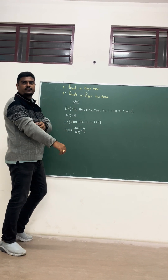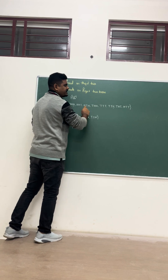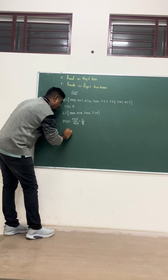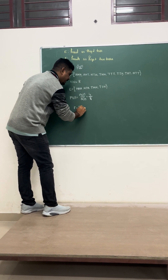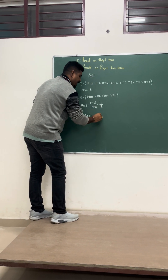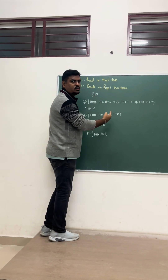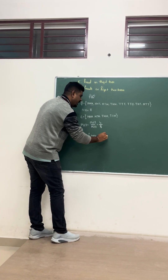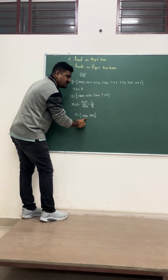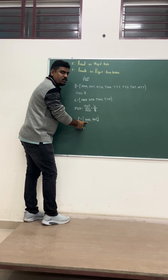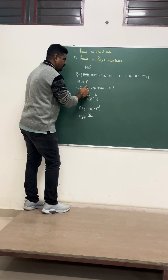Now, Event F: head on the first two tosses. So the outcomes are H, H, H and H, H, T. How many elements do we have? 2. So 2 divided by total sample space, which is 8, gives P(F) = 2 by 8.